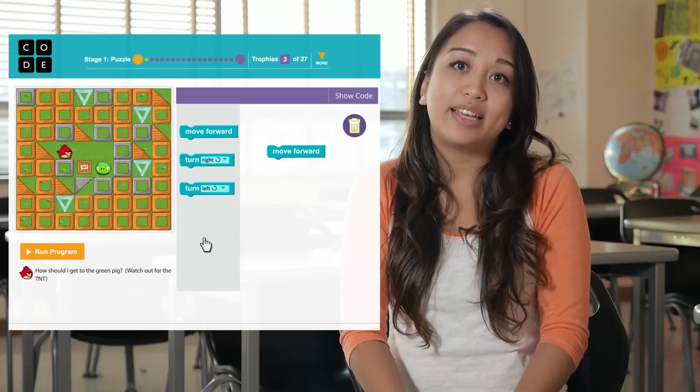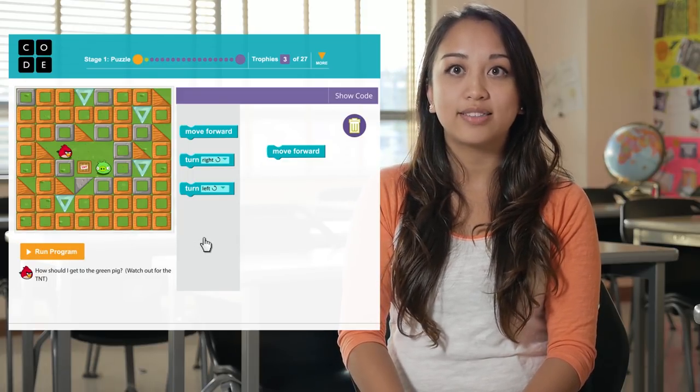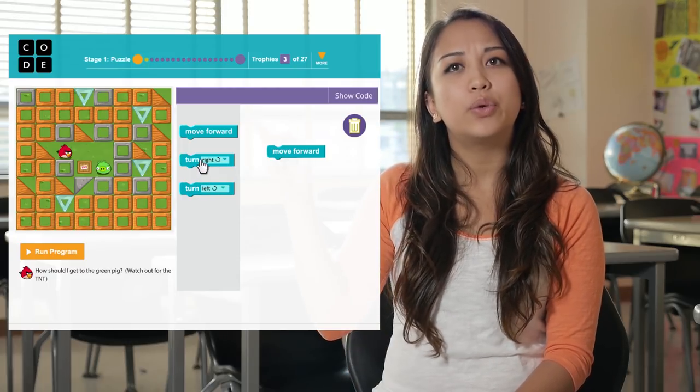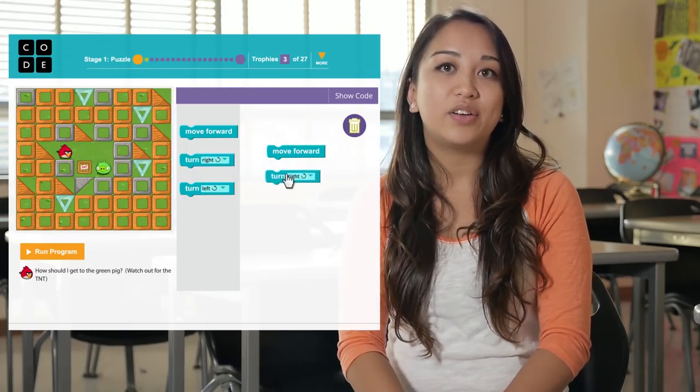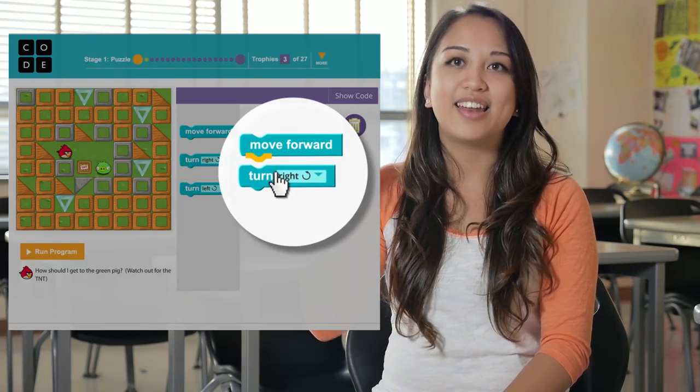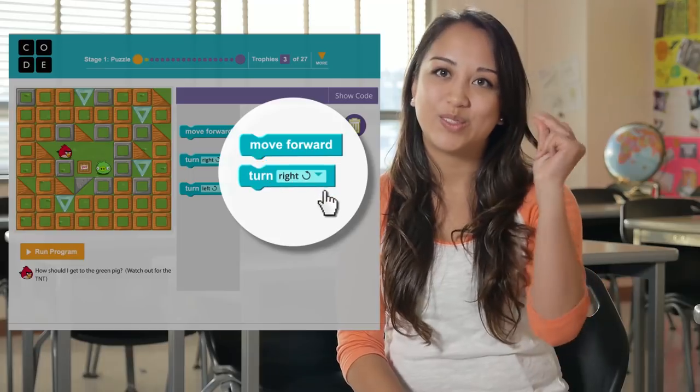And what if I want the bird to do something after the move forward one box? I can add another block to our program. I'm going to choose the Turn Right block, and I'll drag it underneath my Move block until the yellow arrow appears. And then I'll drop it, and the two blocks will snap together.